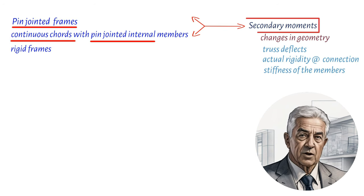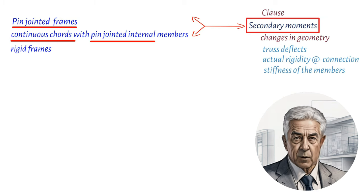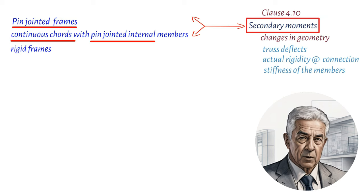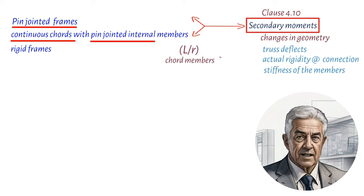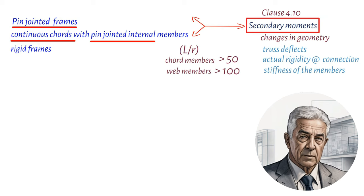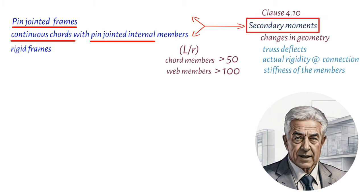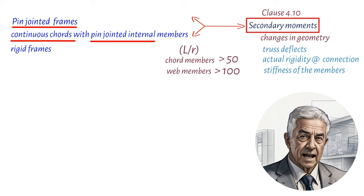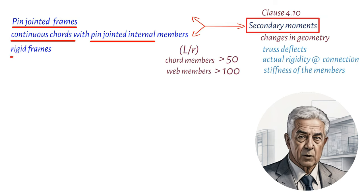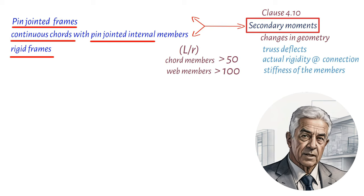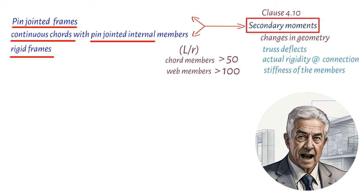To address these secondary stresses, design standards define when they can be ignored. Clause 4.1 states that secondary stresses may be insignificant if the slenderness of cord members in the plane of the truss is greater than 50 and that of most web members is greater than 100. An initial pin-jointed analysis and preliminary member sizing is therefore required to ensure that slenderness constraints can be achieved. If secondary stresses cannot be ignored, a rigid frame analysis will be required to determine the bending moments in the members and at the connections.